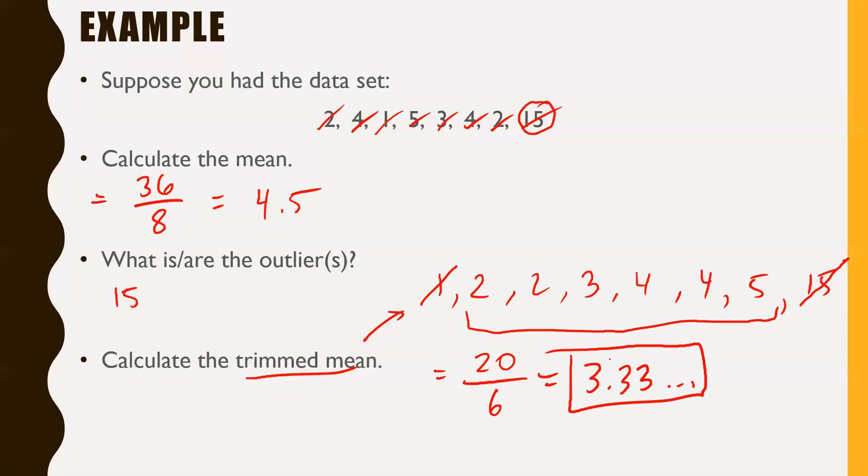Notice that the trimmed mean is different than the mean we calculated initially. It's a lot lower, and that's probably a better indication of what the real average is in this set of numbers. 4.5 is higher than every number except 5 and 15. 3.3, on the other hand, is larger than 4 numbers and smaller than 4 numbers. That's probably a pretty good example of an average.